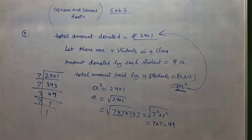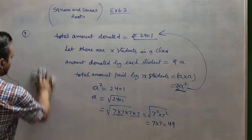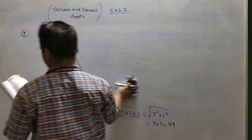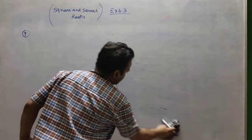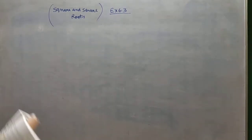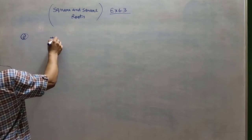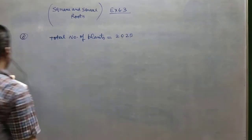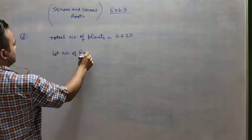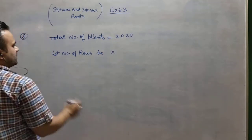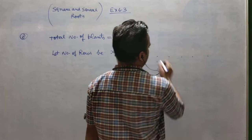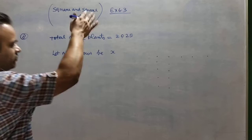Question number 8 is similar but the story is changed. There are 2025 plants to be arranged. If there are 5 rows, then 5 plants are in each row — the condition is the same number of rows and the same number of plants in each row. If we take 10 rows, we have to take 10 plants in each row.